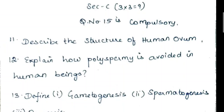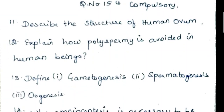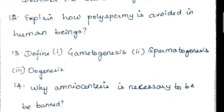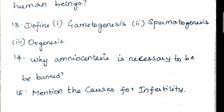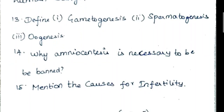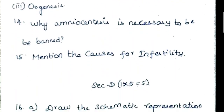3 marks: describe the structure of human ovum, explain how polyspermy is avoided in human beings, define gametogenesis, spermatogenesis, oogenesis. 14th question: why amniocentesis is necessary. 15th question: mention the causes for infertility.